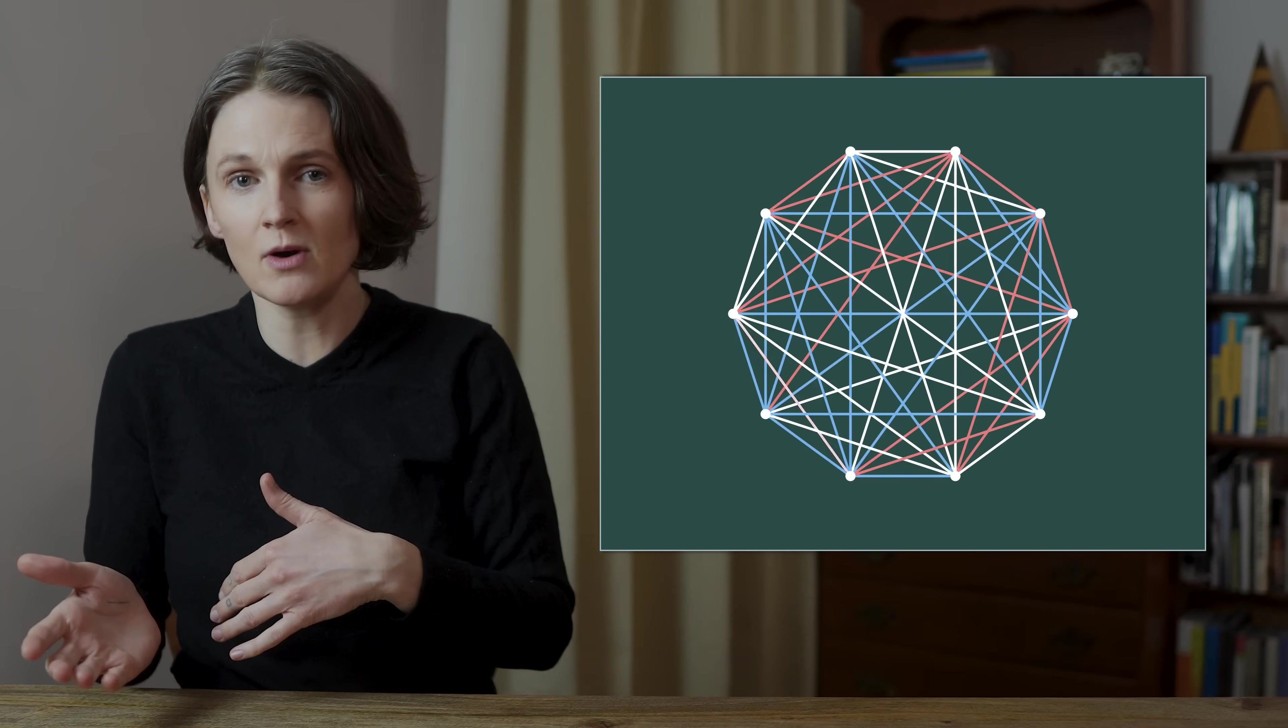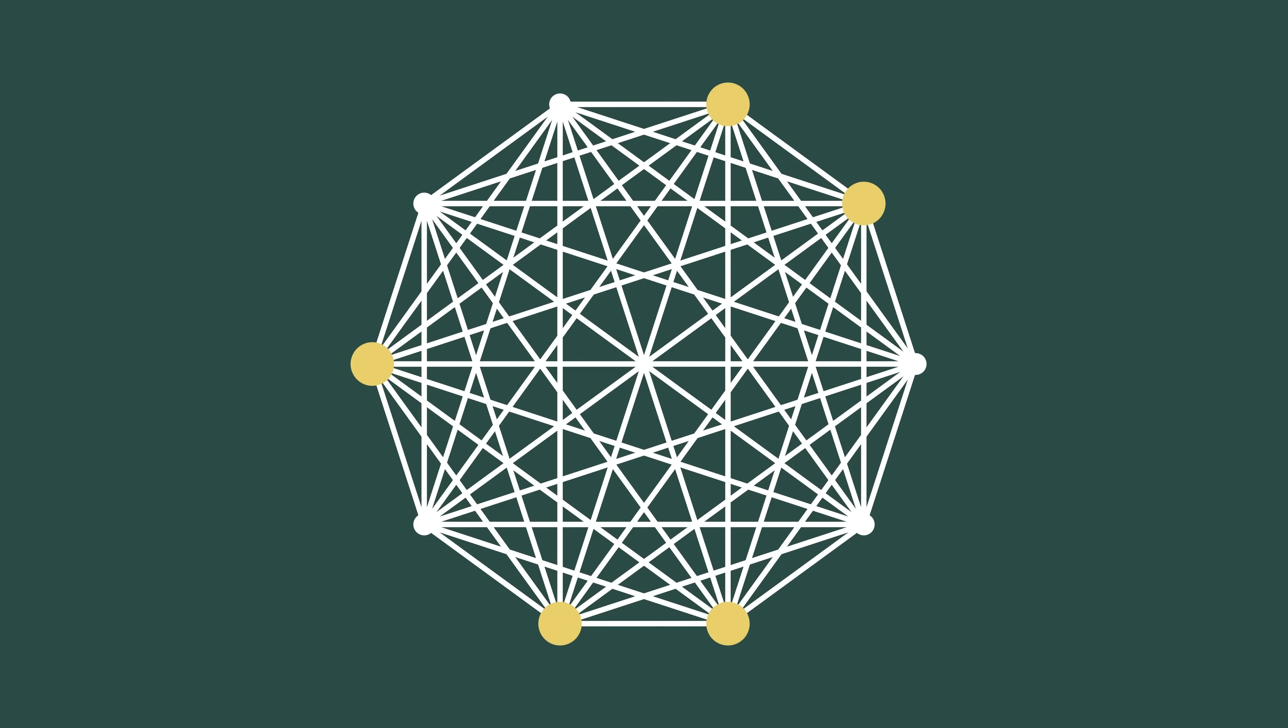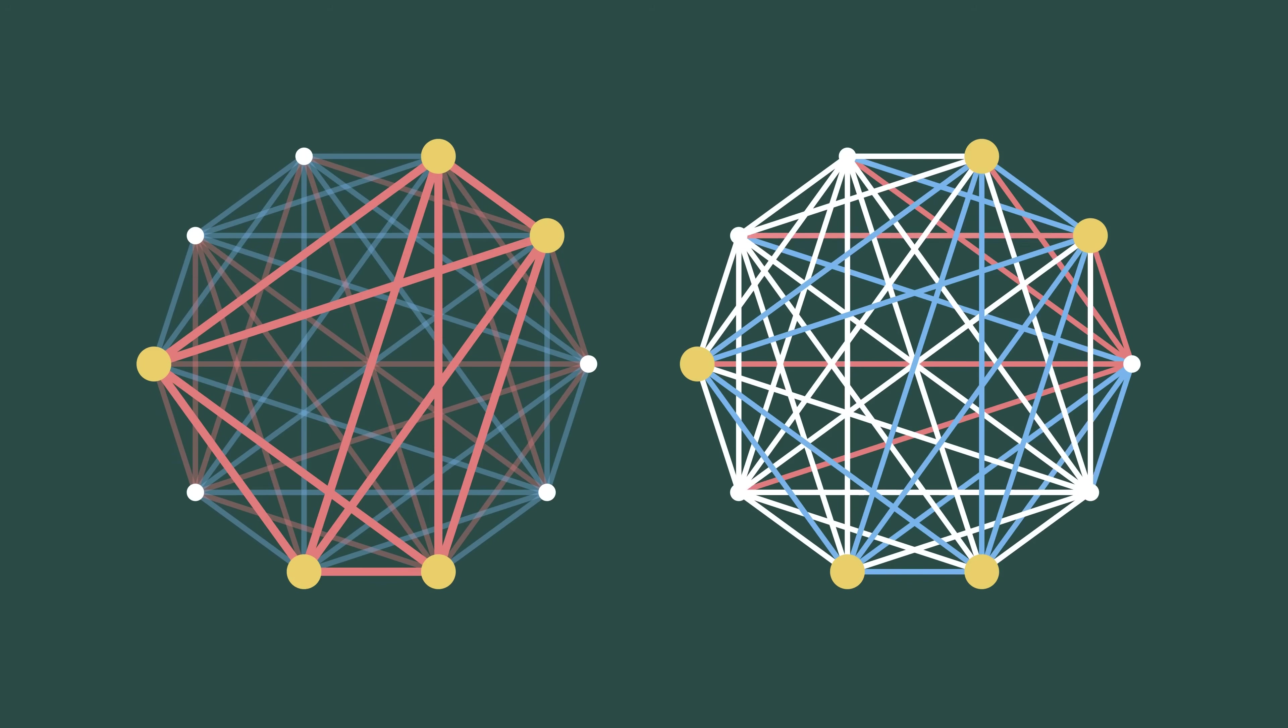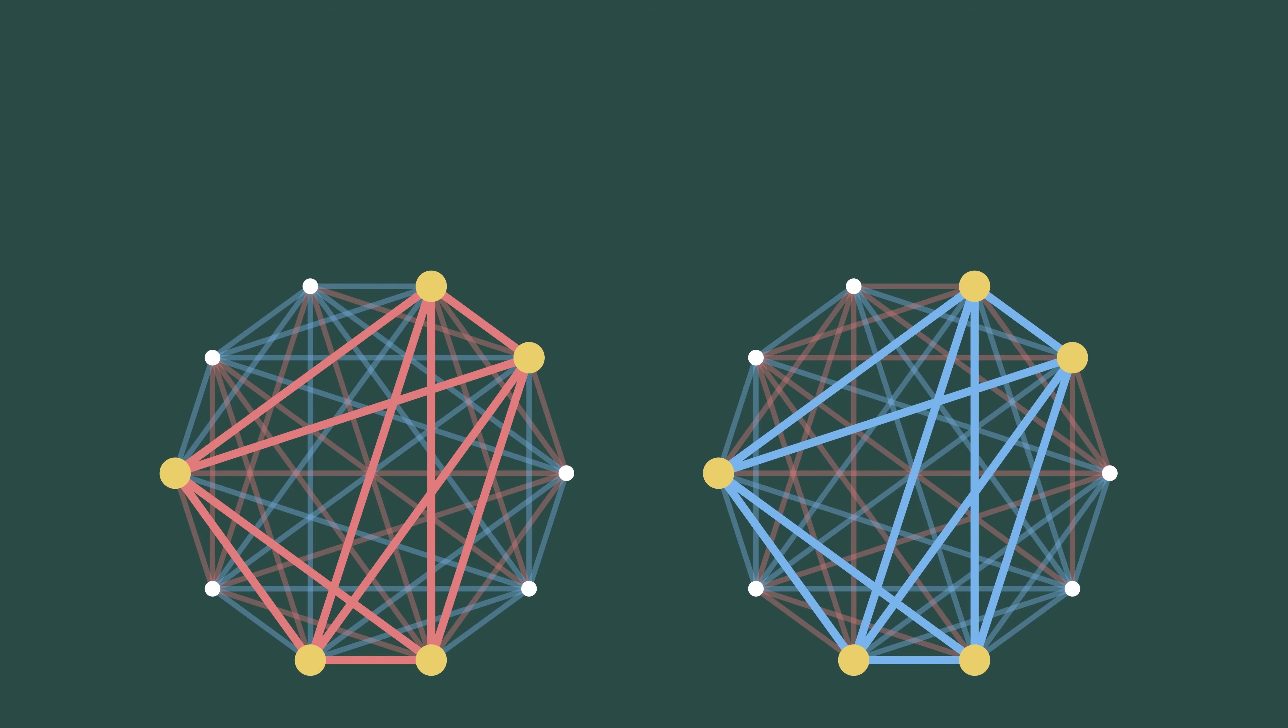It's like flipping a coin that says friends on one side and strangers on the other. How likely is it that these particular five people form a red or blue clique, all friends or all strangers? There are 10 edges connecting the group. It's five choose two, all the ways to choose two people from a group of five. What is the probability that 10 coin flips all come out the same? All friends or all strangers?